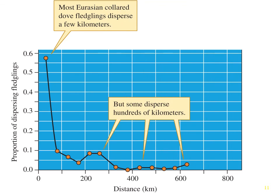A graph shows the distances collared dove fledglings dispersed after learning to fly. The x-axis shows distance moved and the y-axis shows the proportion of fledglings dispersing. Most of them did not go a long distance, but some were going 400, 500, even 600 kilometers away. So even though the average is around 45 kilometers a year, some individuals went quite long distances before finding a place to settle down.